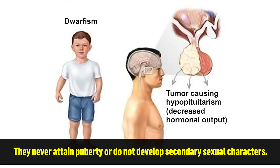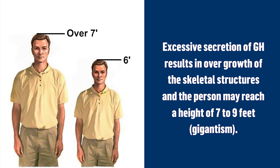They never attain puberty or do not develop secondary sexual characters. The excessive secretion of growth hormone results in overgrowth of skeletal structures and the person may reach a height of 7 to 9 feet, i.e. gigantism.